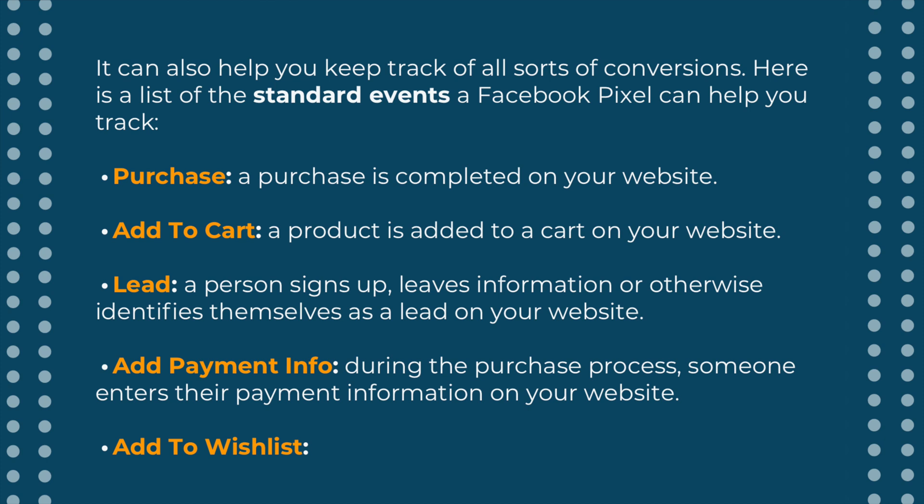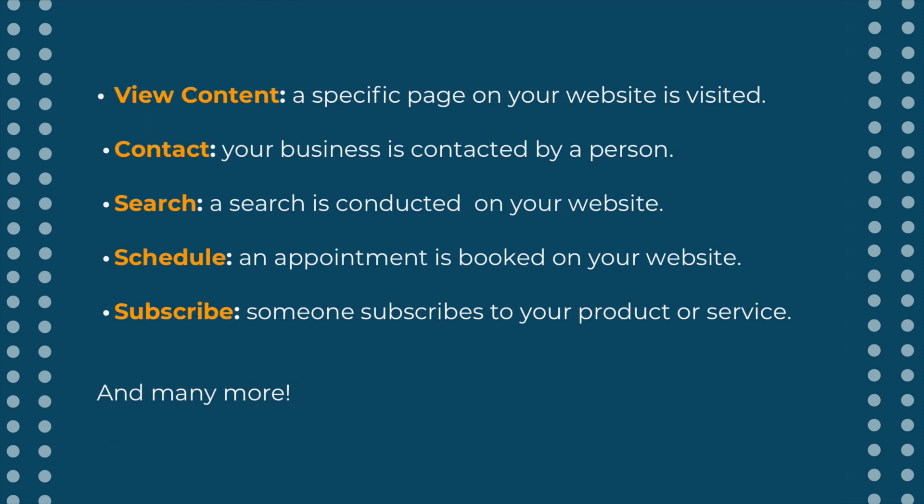Add to wishlist. View content — a specific page on your website is visited. Contact — your business is contacted by a person. Search — a search is conducted on your website. Schedule — an appointment is booked on your website. Subscribe — someone subscribes to your product or service, and many more.